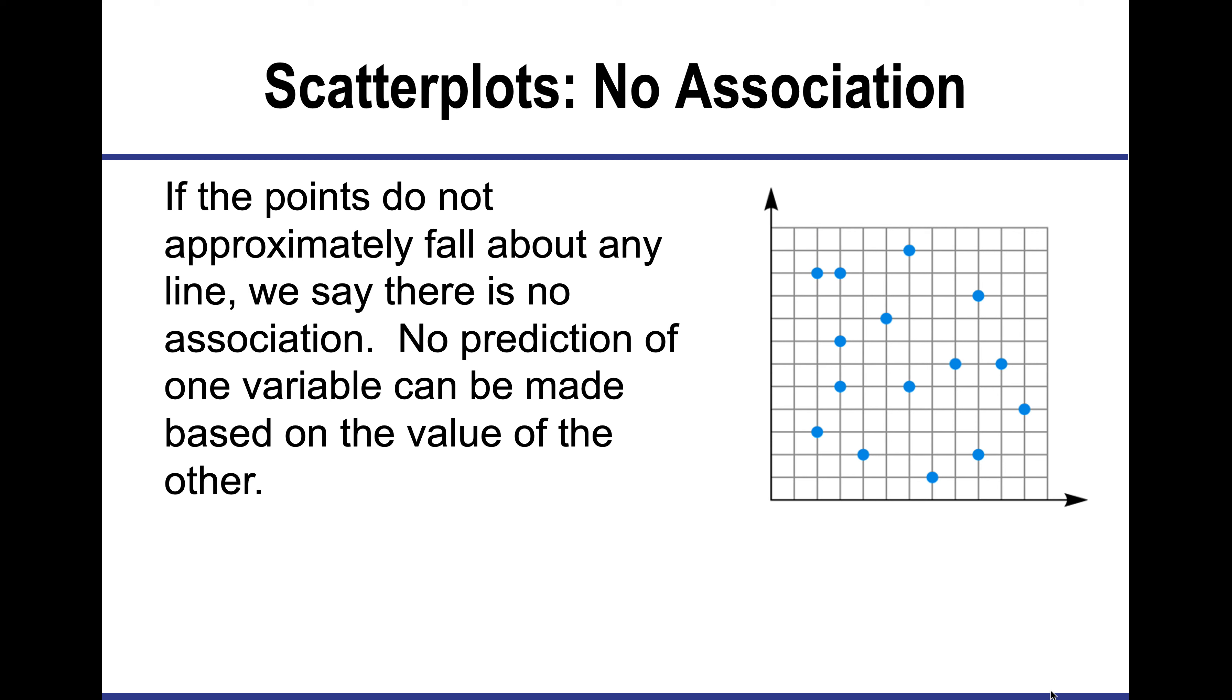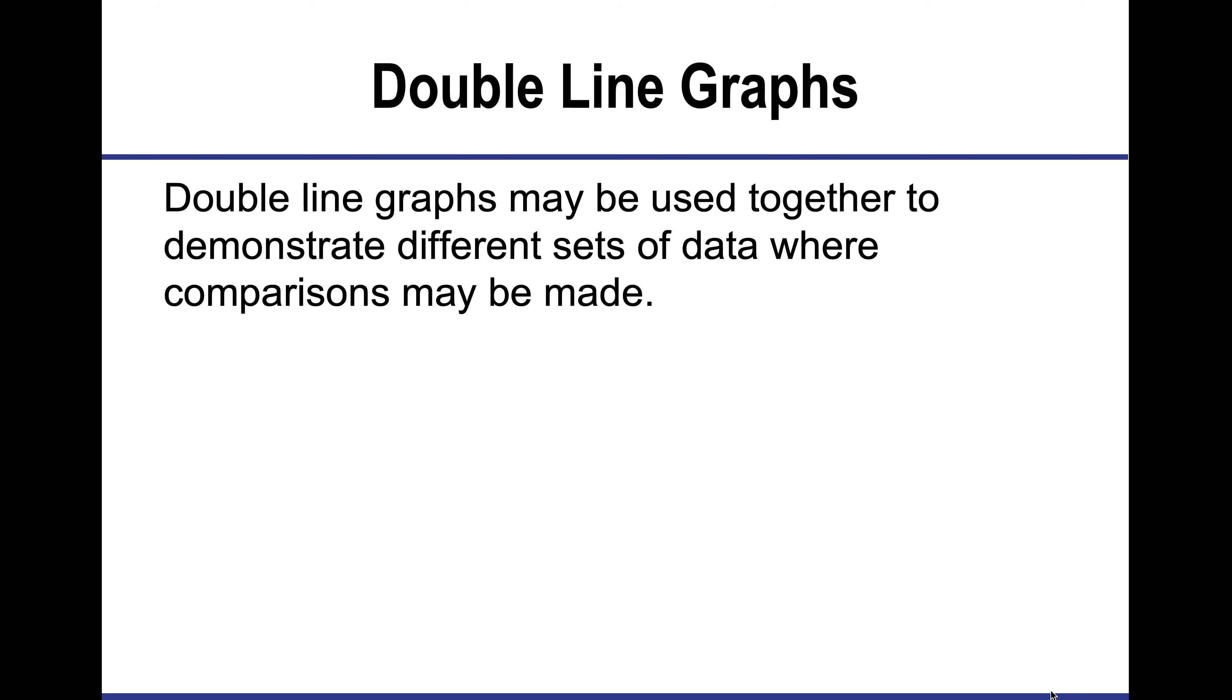Sometimes our data isn't clustered at all and just looks like random points. And in that case, we say that there's no association and I can't predict anything because it's too random and sporadic.